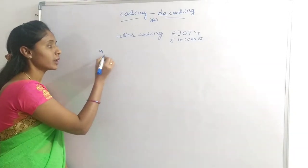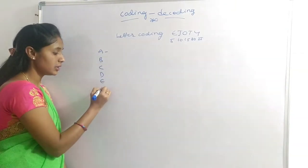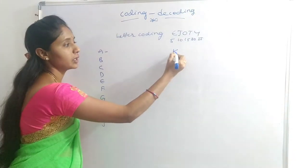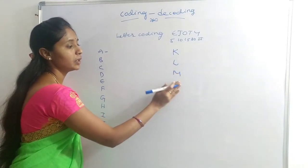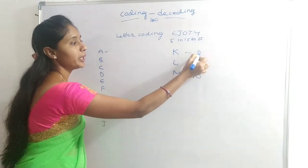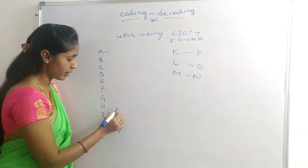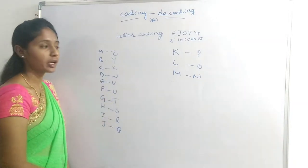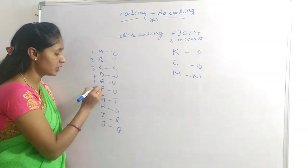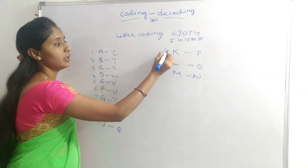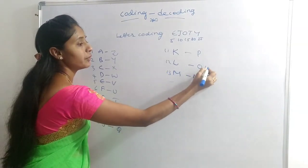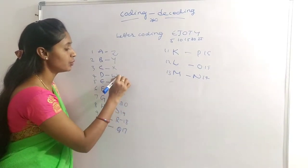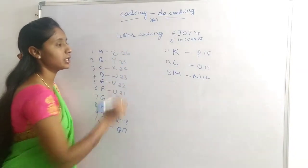The alphabet forward ranks are: A=1, B=2, C=3, D=4, E=5, F=6, G=7, H=8, I=9, J=10, K=11, L=12, M=13, N=14, O=15, P=16, Q=17, R=18, S=19, T=20, U=21, V=22, W=23, X=24, Y=25, Z=26.